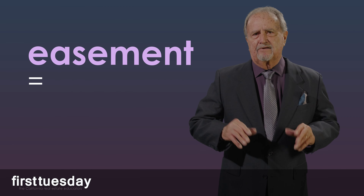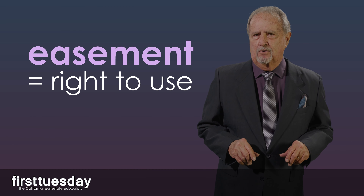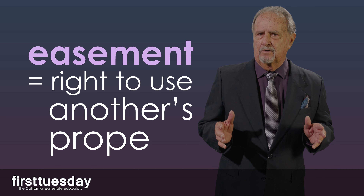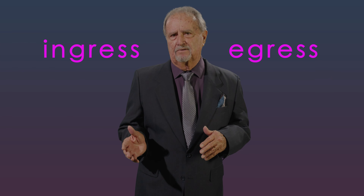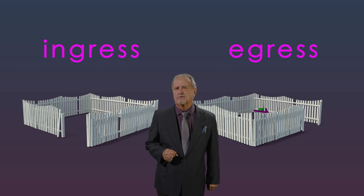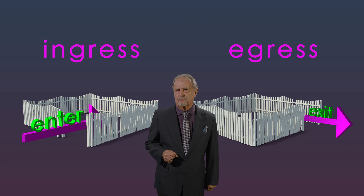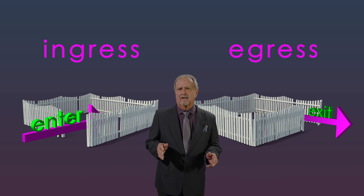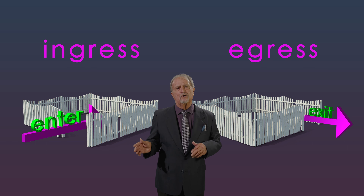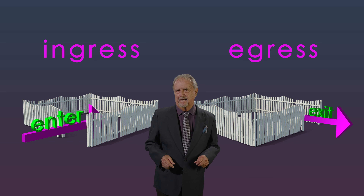An easement is the right of one property owner to use the property of another for a specific purpose. The most common easement is used for ingress and egress, meaning the right to enter or exit through another's property. Therefore, an easement for ingress and egress creates a right-of-way, allowing one property owner to traverse a portion of another's land to access their property.